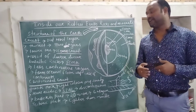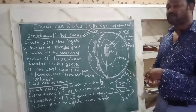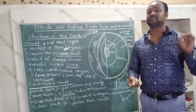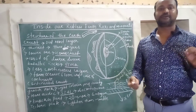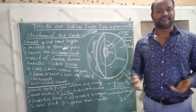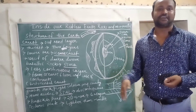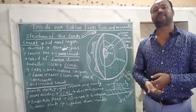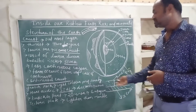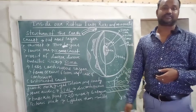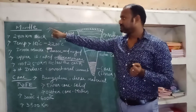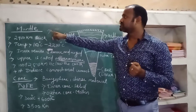The crust is one of the most important layers because it provides the base for all human beings. The continental crust provides the base for continents and the oceanic crust provides the base for the oceans. This is all about the crust.